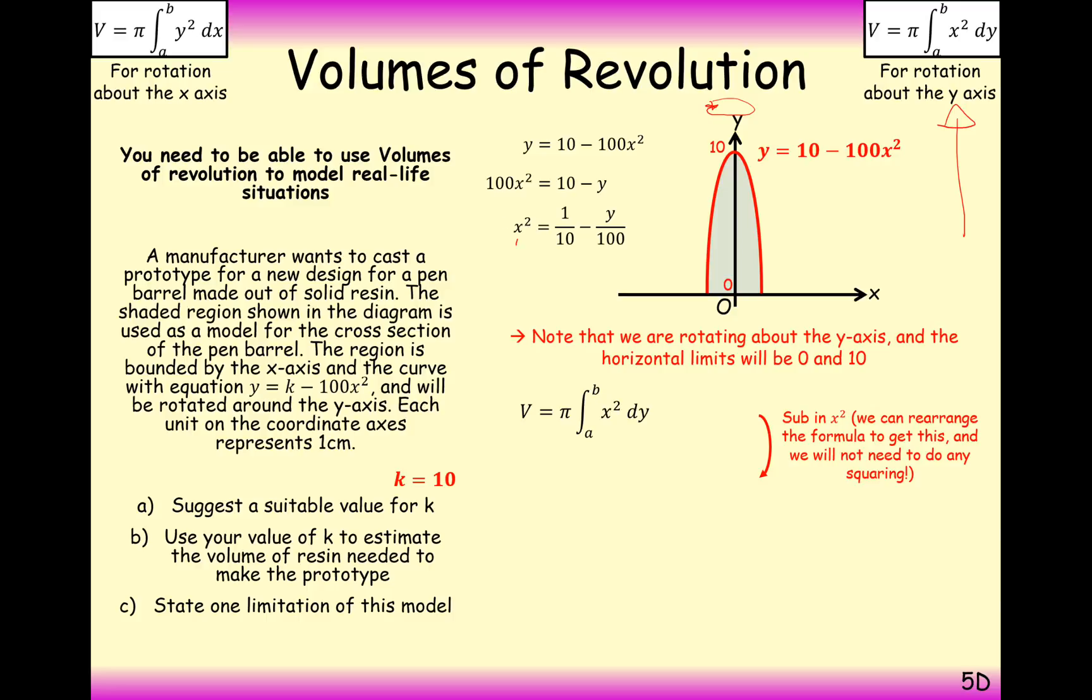So that's our value for x squared. So given that we're substituting in here a value for x squared we don't need to square anything this time. We're just going to leave it as 1 over 10 minus y over 100. Apply your integration and we get y over 10 minus y squared over 200. Substituting the value for 10 and we get v equals pi over 2. So something that's come out quite simple there. Your value for k may be different if you've had a go at this question before. But here in this case here the value for v is pi over 2.